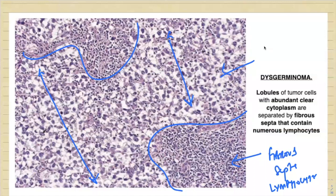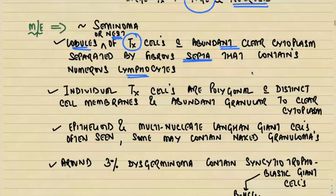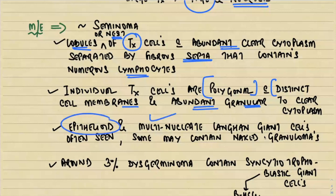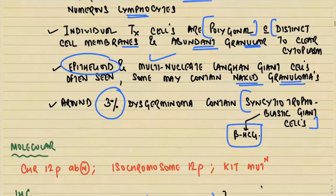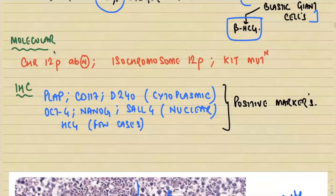The individual tumor cells are polygonal with a very distinct cell membrane and abundant granular to clear cytoplasm. Sometimes in dysgerminoma you can see features resembling tuberculosis — epithelioid cells, multinuclear giant cells, or naked granulomas like sarcoidosis. Around three percent of dysgerminoma cases contain syncytiotrophoblastic giant cells, which may secrete beta-hCG, but beta-hCG is not specific for dysgerminoma. Molecular alterations include isochromosome 12p and KIT mutation.